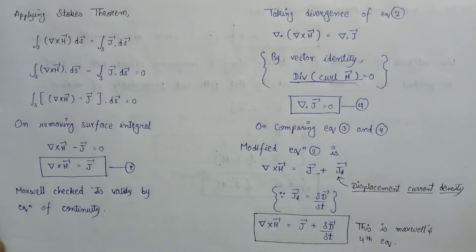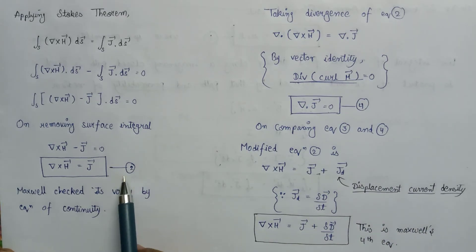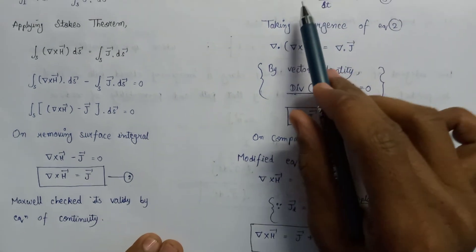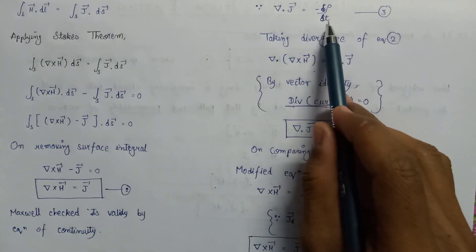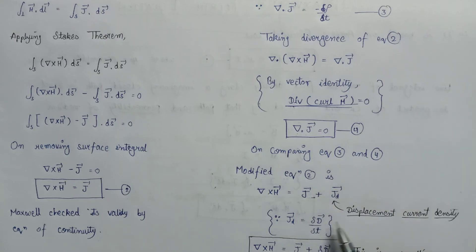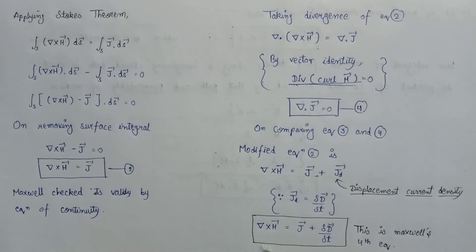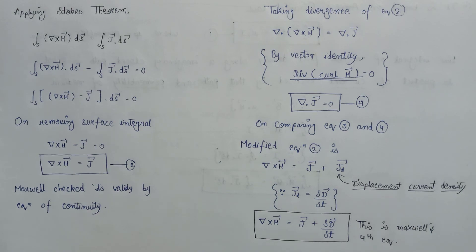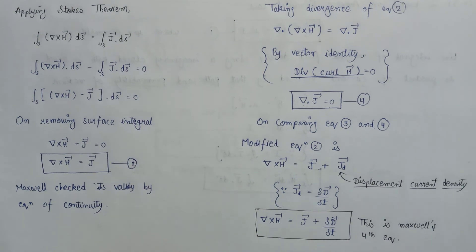In summary, from equation number 2, Maxwell derived ∇×H = J. But according to the equation of continuity, ∇·J = −∂ρ/∂t, which contradicts that result. That is why Maxwell added the displacement current density to the expression, and the modified Maxwell's fourth equation becomes ∇×H = J + ∂D/∂t. This concludes our discussion of Maxwell's fourth equation. Thank you.